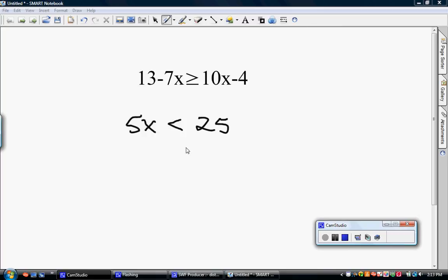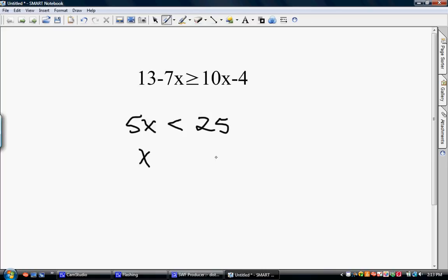Let's say we have an equation 5x is less than 25. We know that when we're about to solve this one, we would divide both sides by 5, so we would get x here and 5 here. Because we had to divide by a positive number, we do not reverse the inequality.